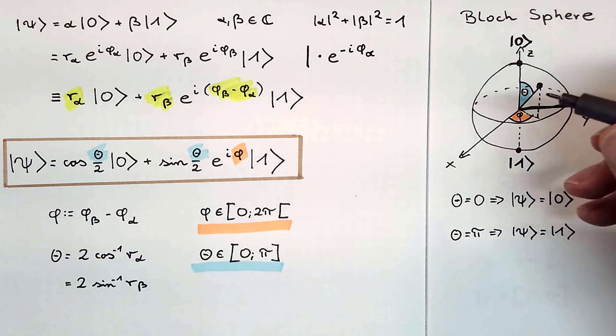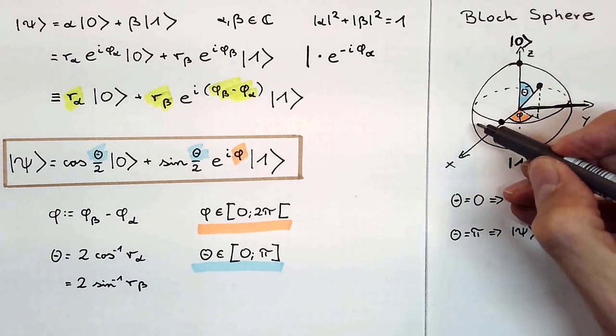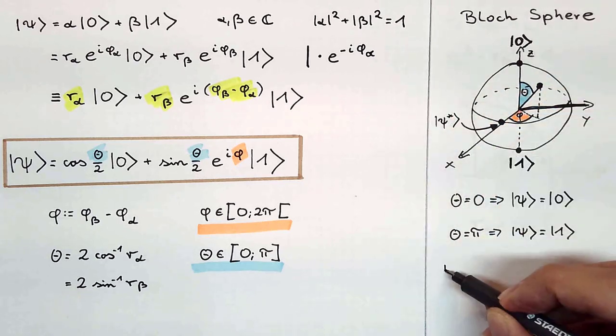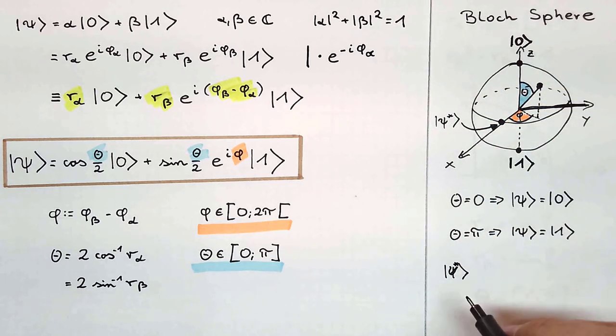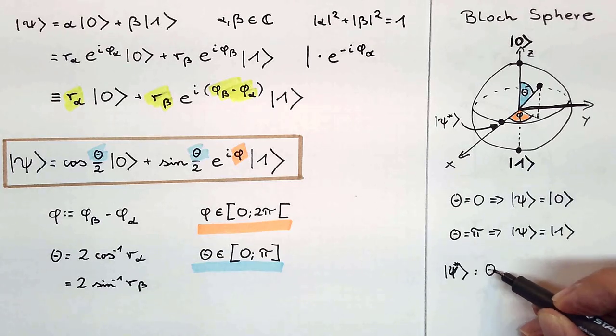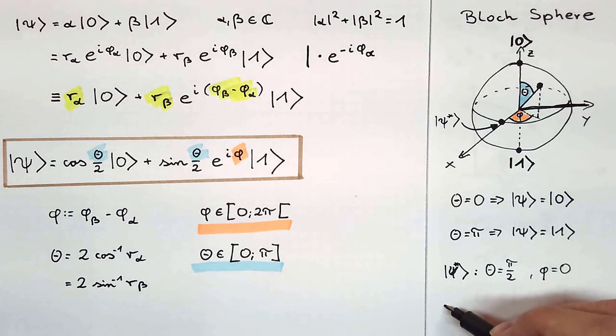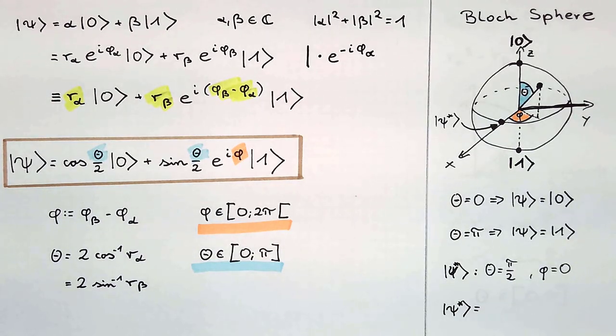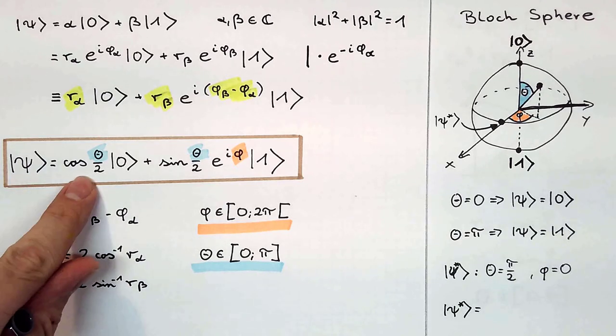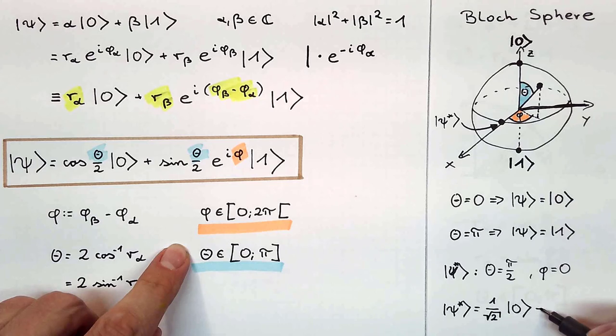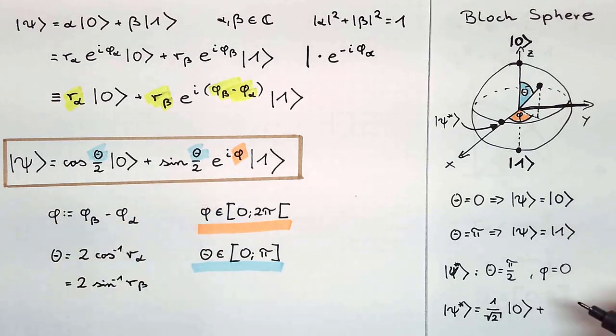One last example, let's define the point where the positive x-axis intersects with the Bloch sphere as the state of a qubit psi star. Then zeta is 90 degrees or pi over 2, and phi equals 0. We plug these values into the formula we just derived and get psi star equals 1 over square root of 2 times state 0 plus 1 over square root of 2 times state 1.